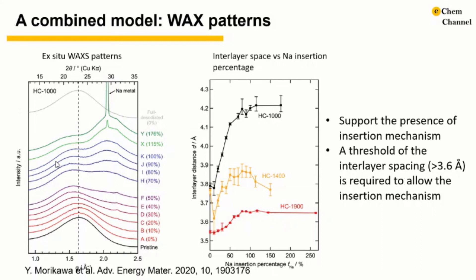The interlayer space change can be observed in the ex-situ WAXS pattern. The broad peak at Q equal to 1.6 to 1.8 corresponds to the atomic correlation relating to the graphene-graphene interlayer distance. Average interlayer spacing upon sodiation can be derived from deconvolution analysis of the WAXS pattern. Upon sodiation of hard carbon up to 50% to 80%, the interlayer space continuously expanded. Expansion amplitudes tend to be significantly smaller as the carbonization temperature increases. Especially, the hard carbon carbonized at 1900°C showed a remarkably smaller expansion compared to the other two samples, implying that sodium atoms were not intercalated into most of the interlayers of that carbon.